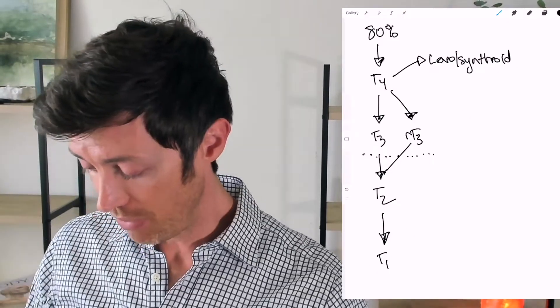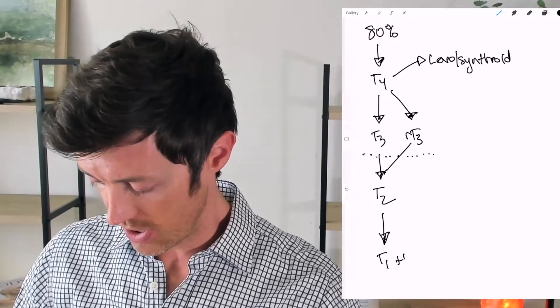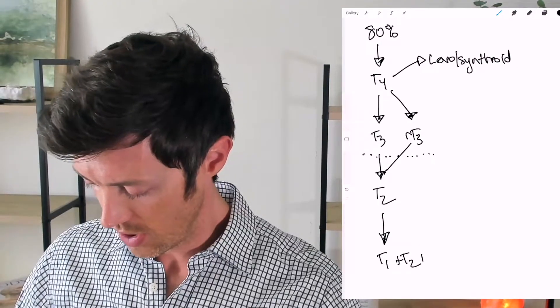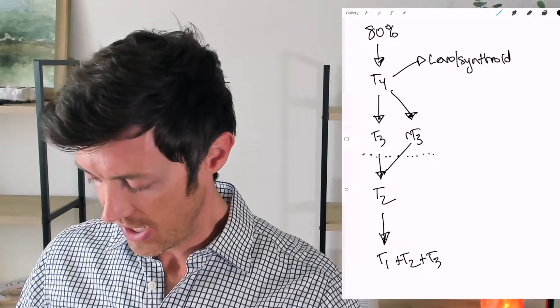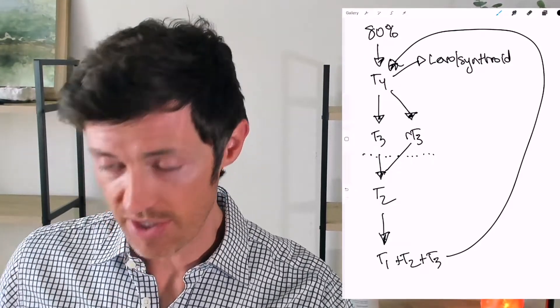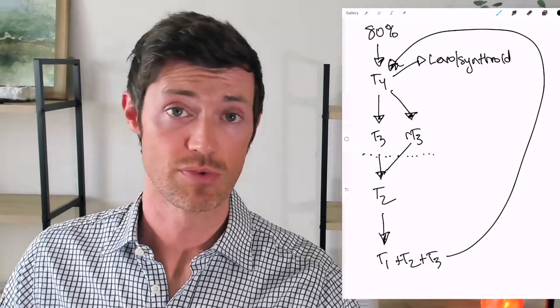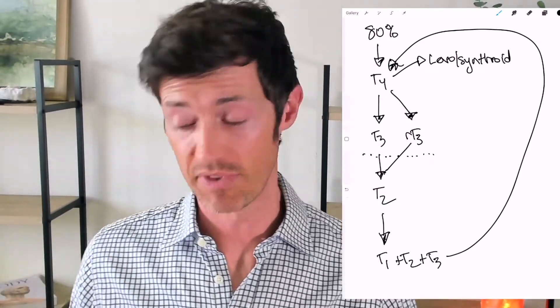And then from here, T2 gets converted to T1. And then from here, your body combines the various types of thyroid hormones. So it might take a T1 plus a T2 plus even a T3. And then it tries to do its best to make more T4. And then that process continues in perpetuity. That's how your body continues to recycle thyroid hormones in bits and pieces of thyroid hormone.